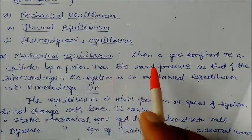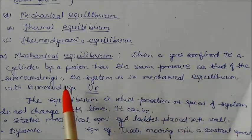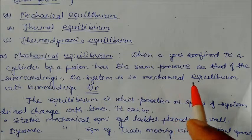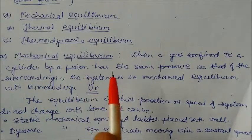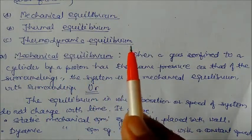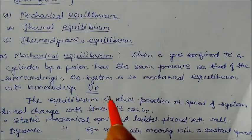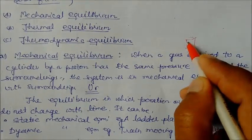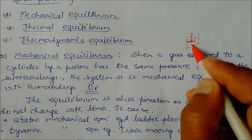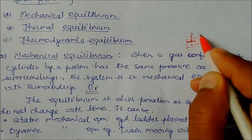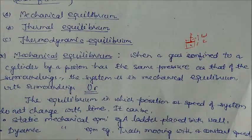Mechanical equilibrium is when a gas confined to a cylinder by a piston has the same pressure as that of the surrounding — the system is in mechanical equilibrium with the surrounding. In a cylinder, the piston is held still — not going up, not going down — because the pressure inside the system and the pressure outside are equal. So pressure outside equals pressure inside; this state is called mechanical equilibrium.